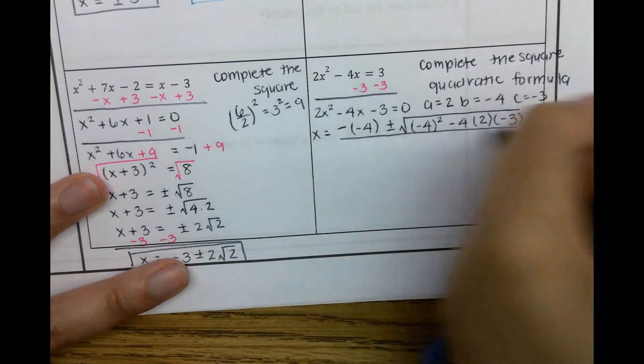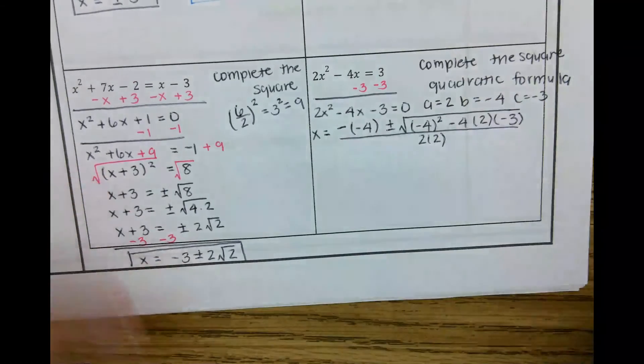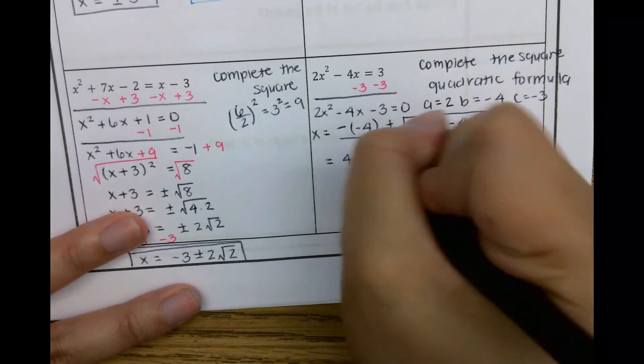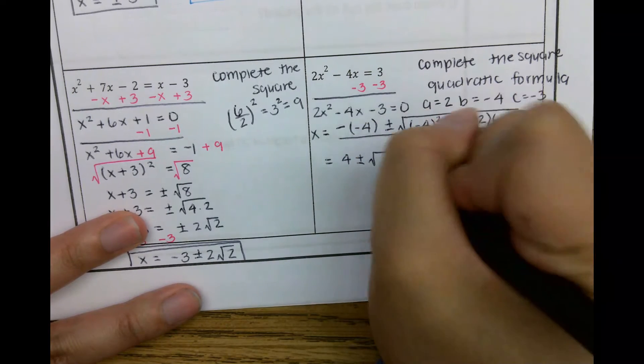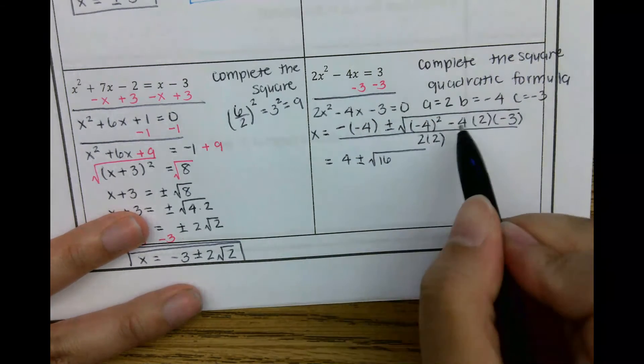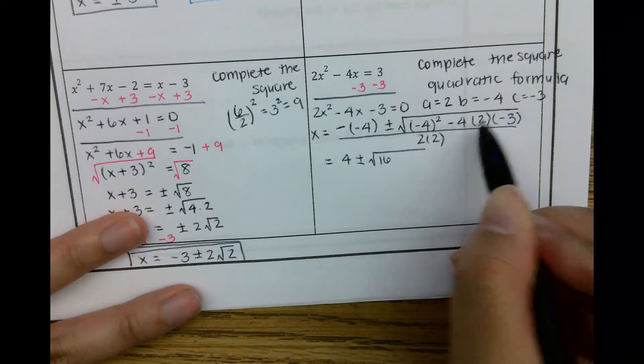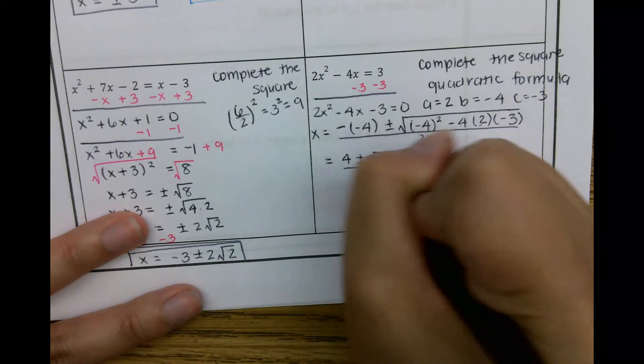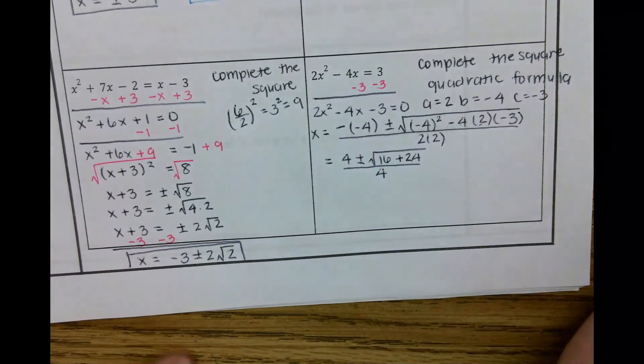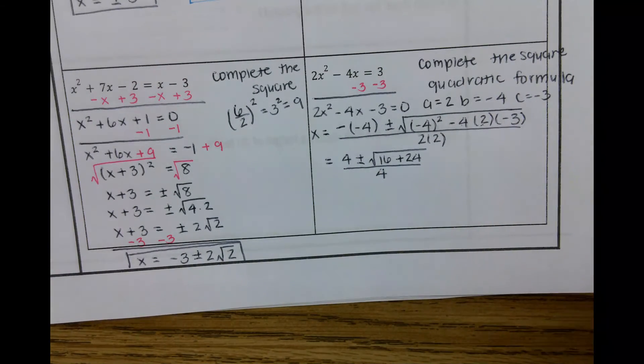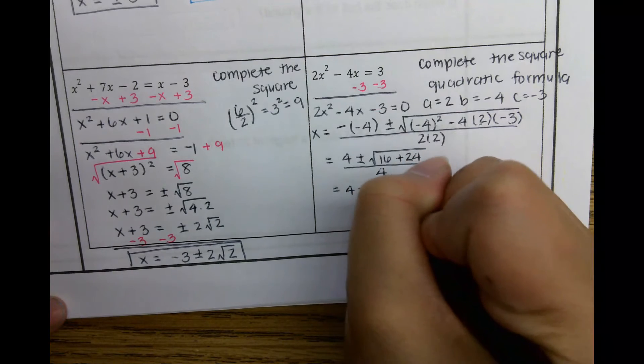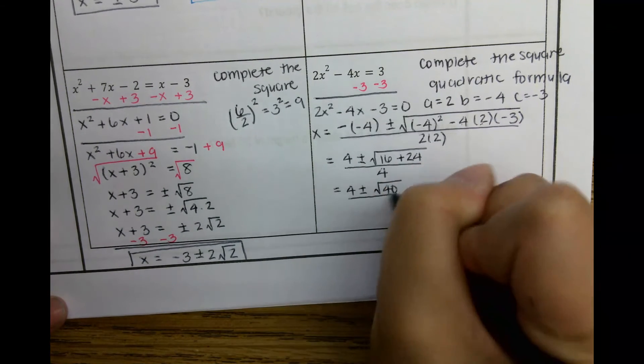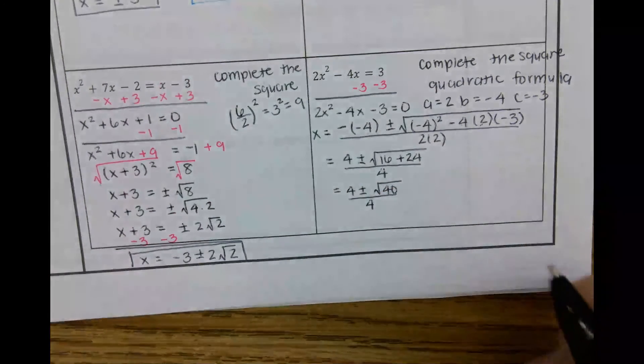Negative negative 4 is 4. Negative 4 squared is 16. Negative 4 times 2 is negative 8. Negative 8 times negative 3 is a positive 24. And then 2 times 2 is 4. Keep simplifying it. 4 plus or minus 16 plus 24 is 40. Square root of 4.